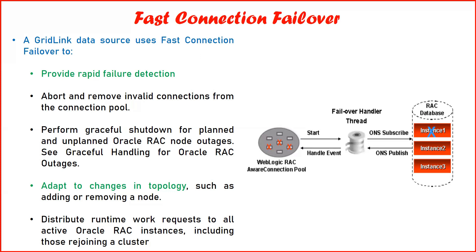If any failure occurs in the backend, it is automatically published via the notification service to your connection pool, and the connection pool can remove that dead connection from the active connections. So we are not using test connection on reserve — instead it automatically maintains healthy connections via notification services. This also adapts to changes in topology such as adding or removing a node. For example, if today you have two database instances and tomorrow you scale to three or four RAC instances, the newly added instances get automatically populated in your connection pool.